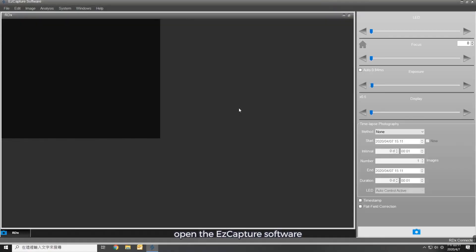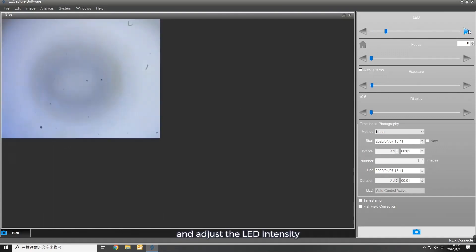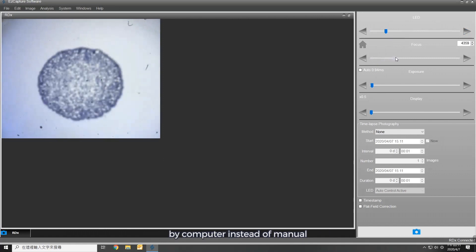Open the EZCapture software, put the sample on the stage, and adjust the LED intensity. Adjust motorized focus, which is controlled by computer, instead of manual.